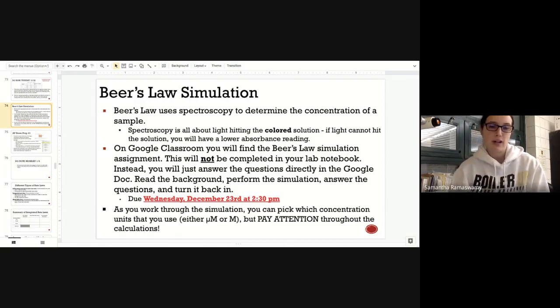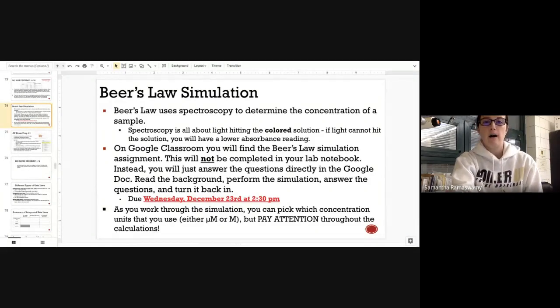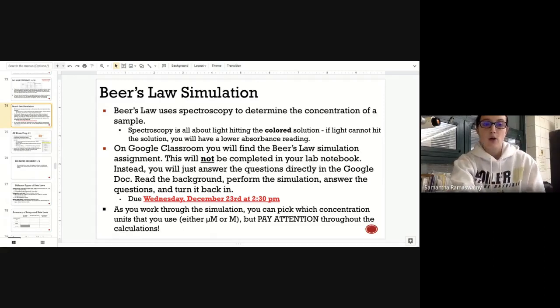I had some questions sent to me yesterday. So as you work through the simulation, it gives you concentration in micromolar. So this U is micro. Micro is the opposite of mega. So there's actually 1 million micromolar in one molar. But they give you the units in micromolar. If you want to use that the entire time, that's fine, but make sure you're paying attention to your units. So always pay attention to your units. And so again, the Beer's Law simulation, you're actually doing a different solution based on your last name. All of the instructions are laid out in Google Classroom. In the instruction section, I typed out all the instructions for you. They're also in that Google doc.